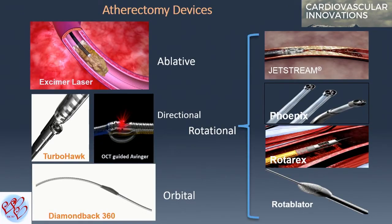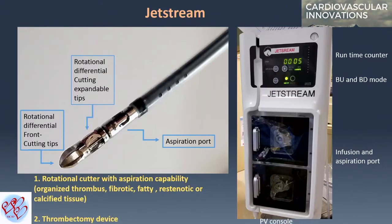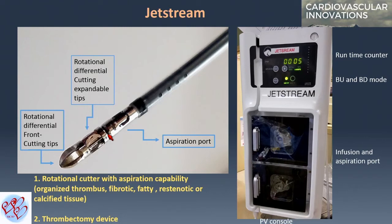There are many atherectomy devices, and our focus is going to be on the JetStream device. This is a rotational cutter with an aspiration capability. It works very well on organized thrombus, fibrotic, fatty, restenotic, or calcified tissue. It's also indicated as a thrombectomy device. The tip is a rotational differential front cutting tip, with a rotational differential cutting expandable tip proximal to it, and an aspiration port proximal to all the cutting tips. The console provides infusion, aspiration, a runtime counter, and blade up and blade down modes.